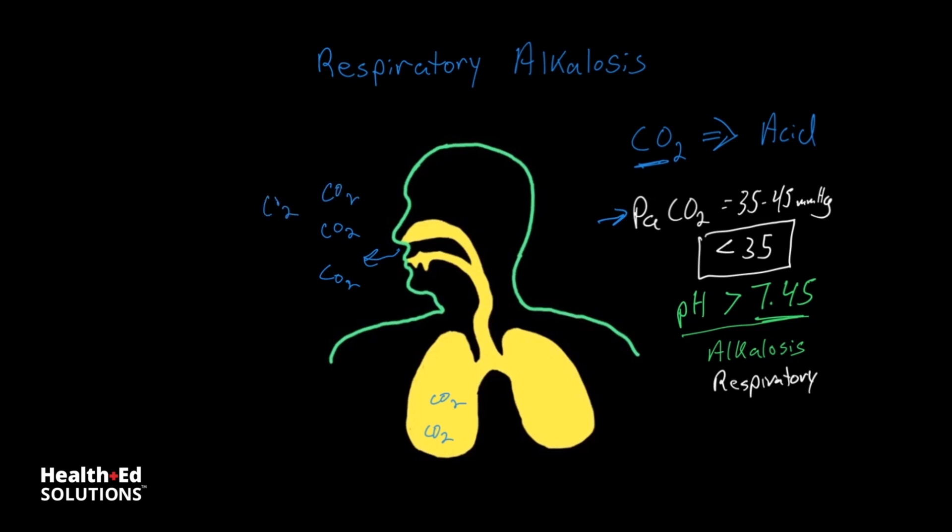So we basically are excreting CO2 through the lungs and out into the air. And if we are breathing fast and or deep, we will excrete so much CO2 that we will decrease the level of CO2 to less than 35 millimeters of mercury.